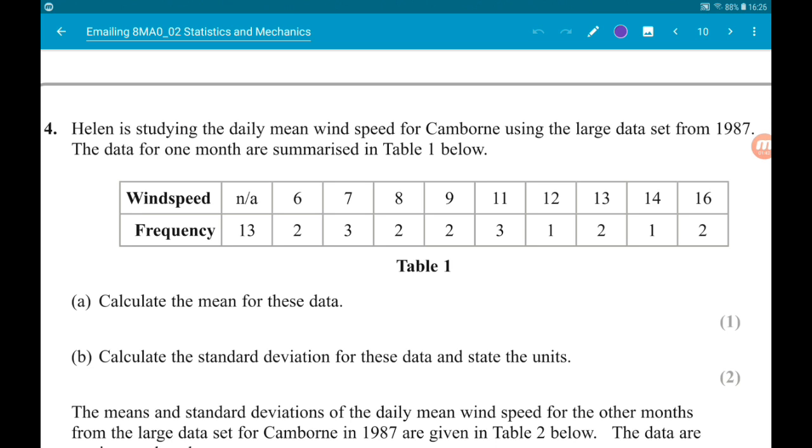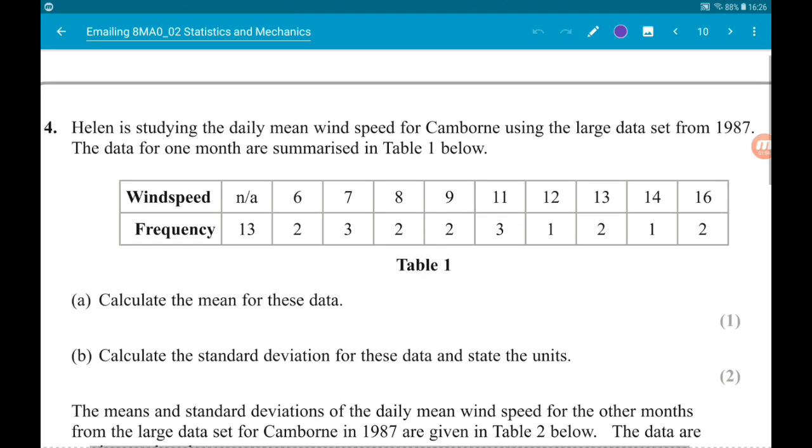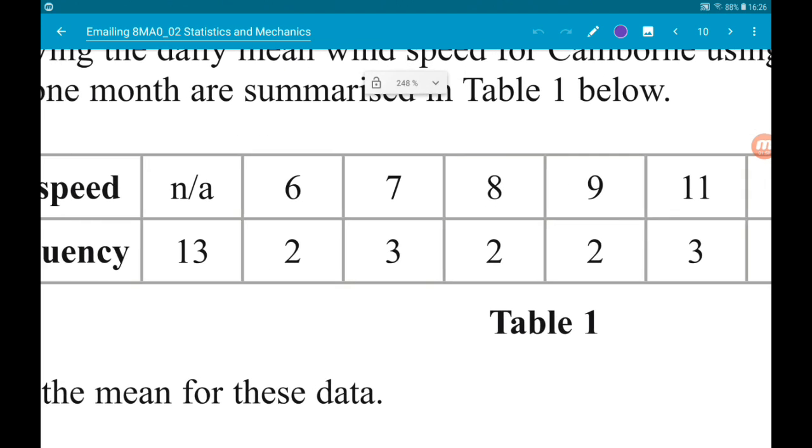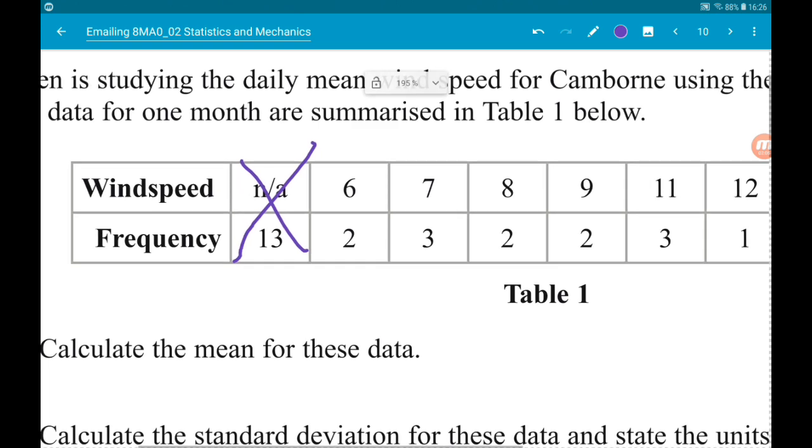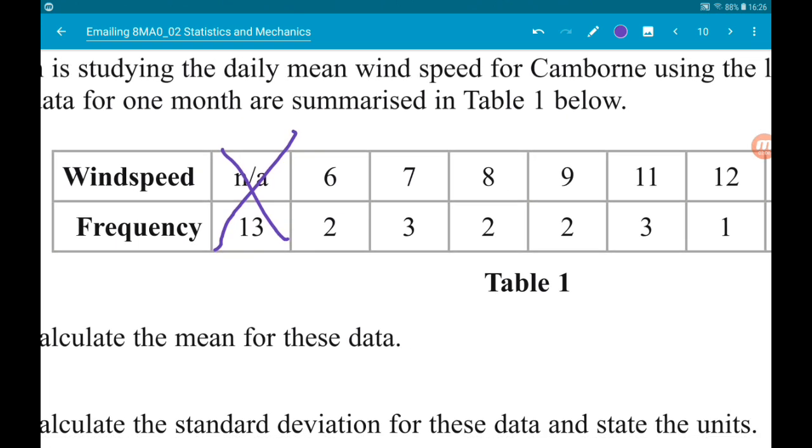What you should now have is a table with x on the left and frequency on the right. So we put in our wind speeds as the x values and the frequencies for the frequencies. Now what do we do about this column where we got an N/A? We just pretend it doesn't exist. So once you put those data in, then press AC to go back to the main calculation screen.